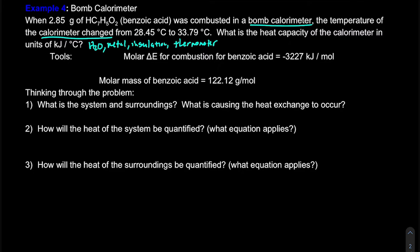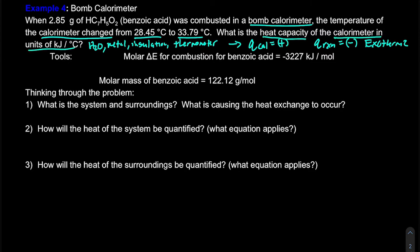went from 28.45 to 33.79 degrees Celsius. Right off the bat we notice that the Q of our calorimeter is positive — it gained energy because it increased in temperature — and the Q of our reaction is going to be negative, meaning this is an exothermic reaction. We want to identify the heat capacity of the calorimeter in units of kilojoules per degree Celsius. We're going to calibrate that calorimeter by determining how much energy it absorbs when it undergoes a temperature change. The information we have is the change in internal energy for the combustion of benzoic acid, which is negative 3,227 kilojoules per mole, and the molar mass of benzoic acid.